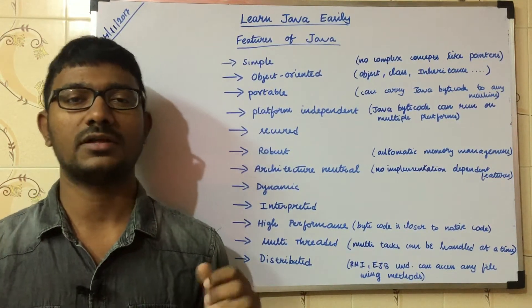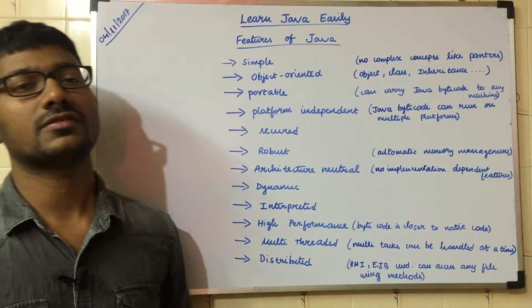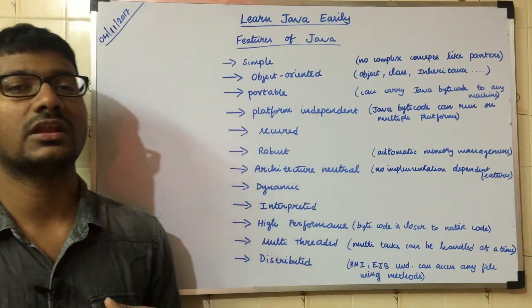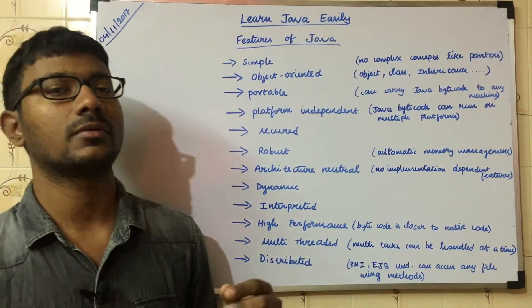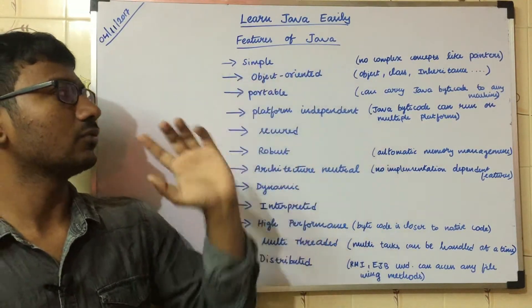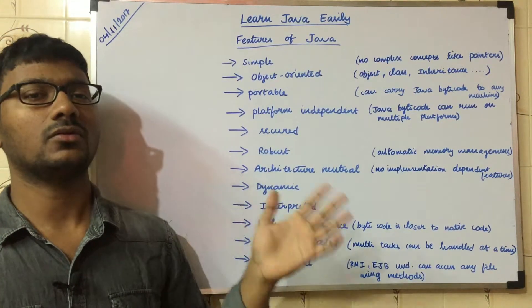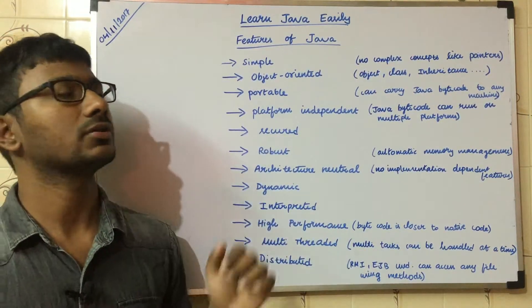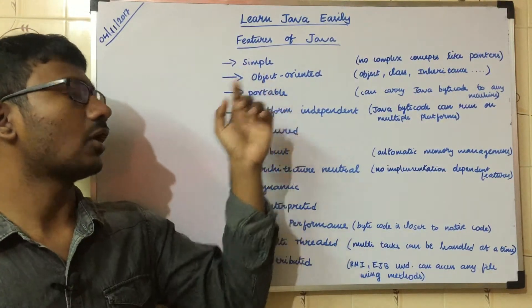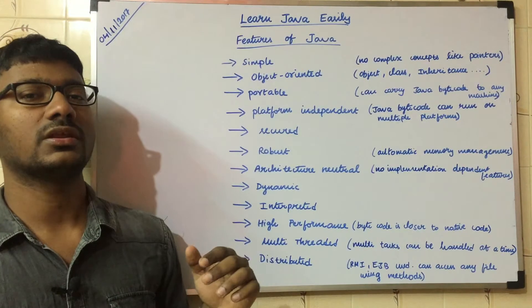Java is supported and that is a very important reason why it is easy to learn. Next is Object Oriented — Java is Object Oriented.